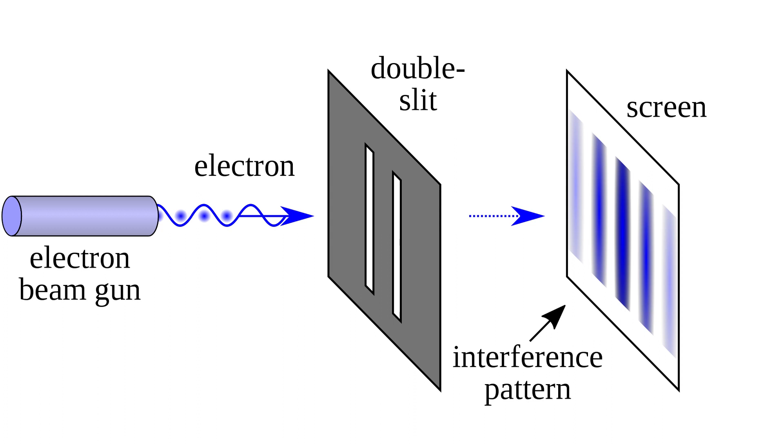If we send the electrons through one by one and we detect their arrival on the screen one by one, then you would expect that these particles would not create an interference pattern, as they cannot interfere with any other particles. Yet, if we run this for long enough, the same interference pattern is created. This implies that each particle must pass through both slits at the same time and interfere with itself.